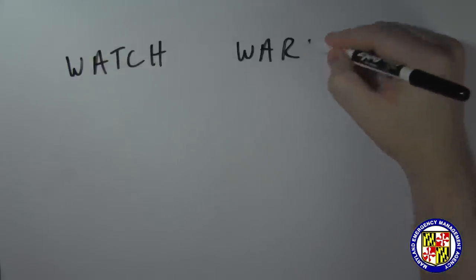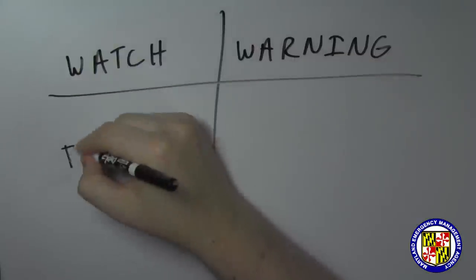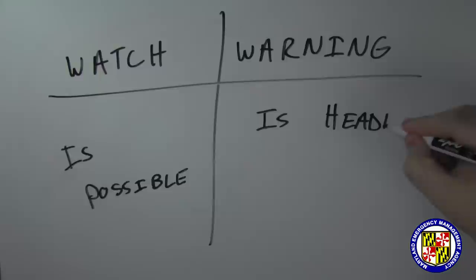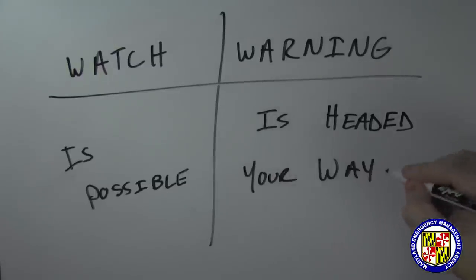Start by knowing the weather terms used with winter weather. A winter storm watch means a winter storm is possible in your area. A winter storm warning means a winter storm is headed your way.